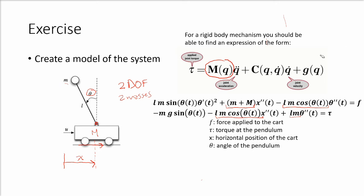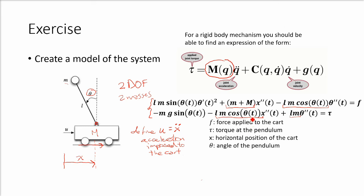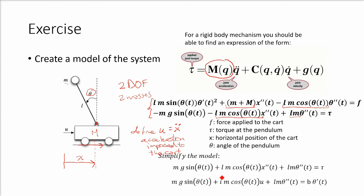These two equations describe our system. However, we can simplify the model by assuming perfect control of the position of the cart, meaning we can define the cart's acceleration at every time step. Defining u as the input acceleration, we can use just the second equation to describe the angle of the pendulum. We also assume no input torque at the pendulum joint, but there could be a friction term, which we define as b times theta-dot.